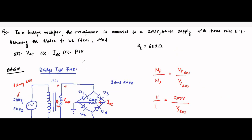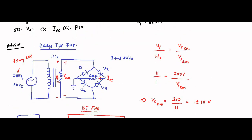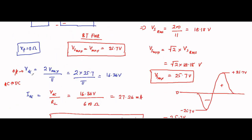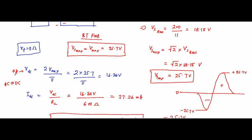This is a straightforward question related to bridge type rectifiers. All you need is a basic understanding of transformer turns ratio, how to relate primary and secondary winding voltages, and the formulas for converting between RMS, maximum, and DC values. Applying these formulas gives the required parameters: VDC, IDC, and peak inverse voltage.